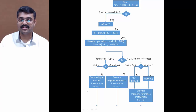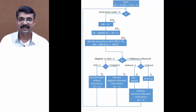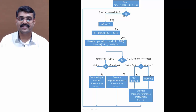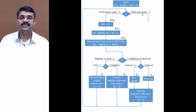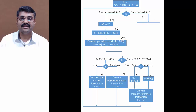This completes the instruction cycle. After execution of any instruction, control goes back to the fetch stage. However, before fetching again, we check the R flip-flop, because R decides whether the next cycle is an instruction cycle or an interrupt cycle.